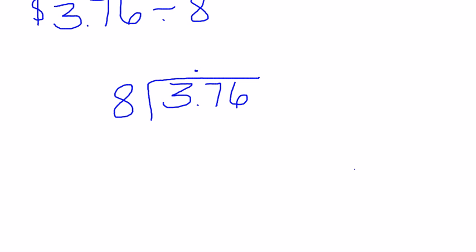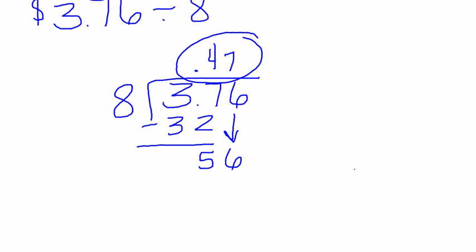Eight will go into 37 four times. Four times eight is 32. 37 minus 32 is five. Bring down our six. Eight will go into 56 seven times. So per box would be 47 cents for this offer.